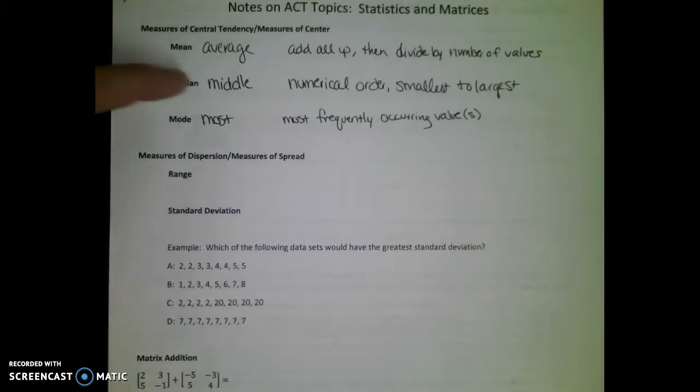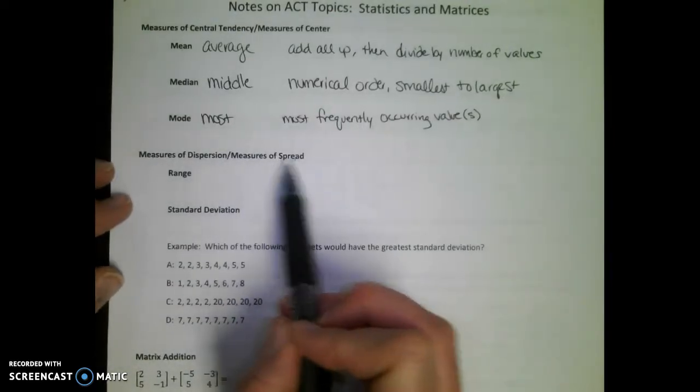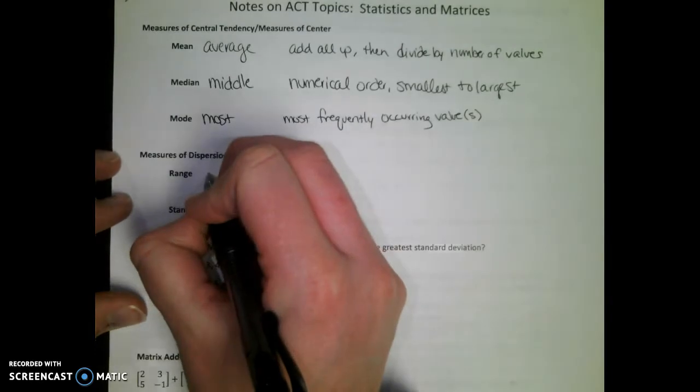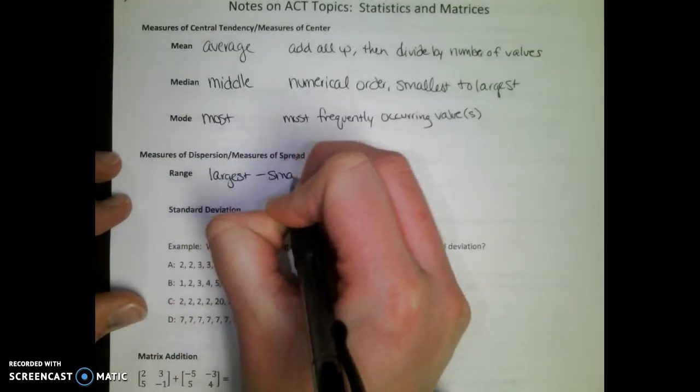One extra thing with median: if you have an even number of data values and you count into the middle, if the median happens between two data values, you find the mean of those two data values to find that middle point between them. Range measures how spread out the data is, and range is the largest number minus the smallest number.